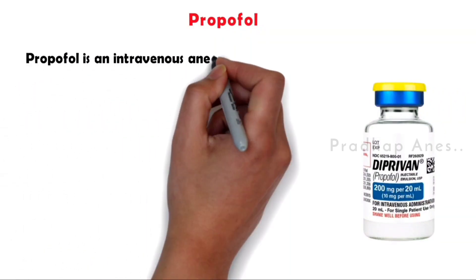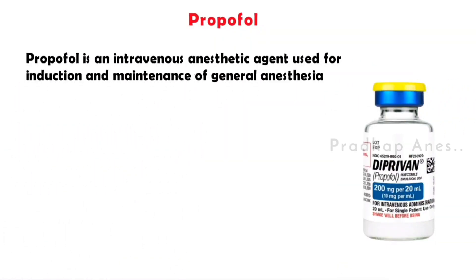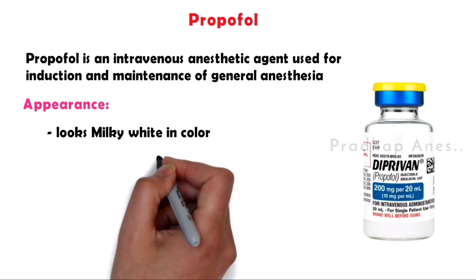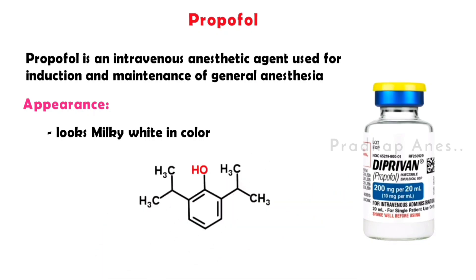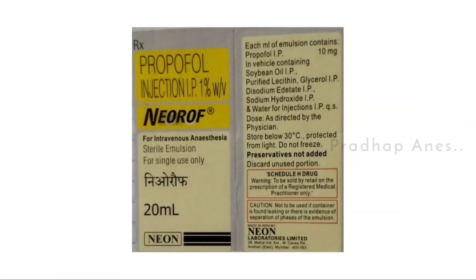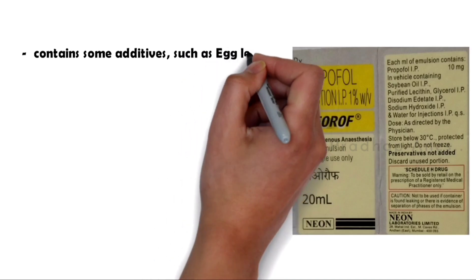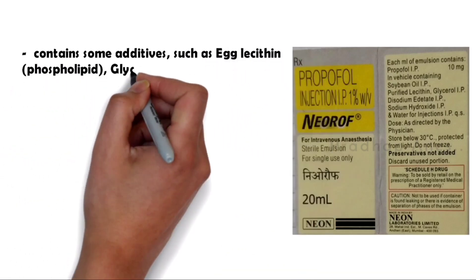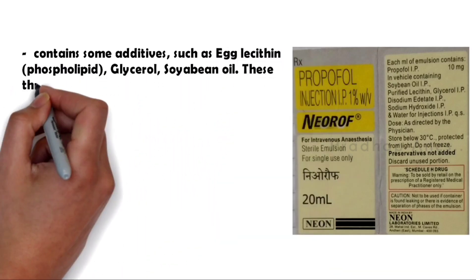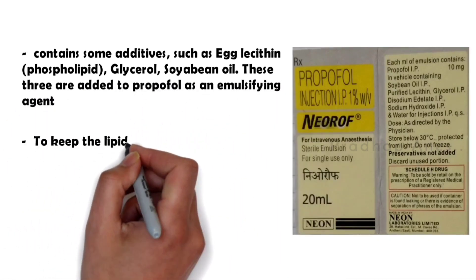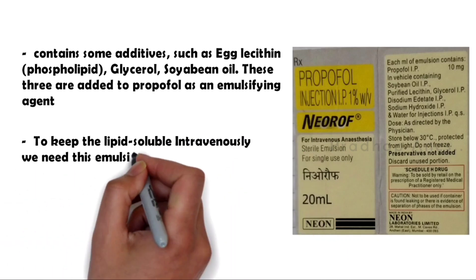Propofol is an intravenous anesthetic agent used for induction and maintenance of general anesthesia. It looks milky white in color. Chemically, the structure of propofol is 2,6-diisopropylphenol. It also contains additives such as lecithin, phospholipid, glycerol, and soybean oil. These are added to propofol as emulsifying agents to keep the lipids soluble intravenously.